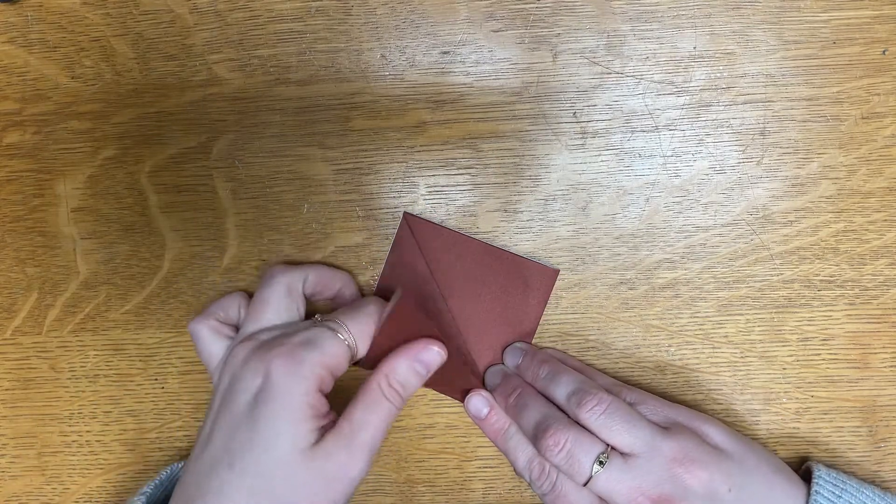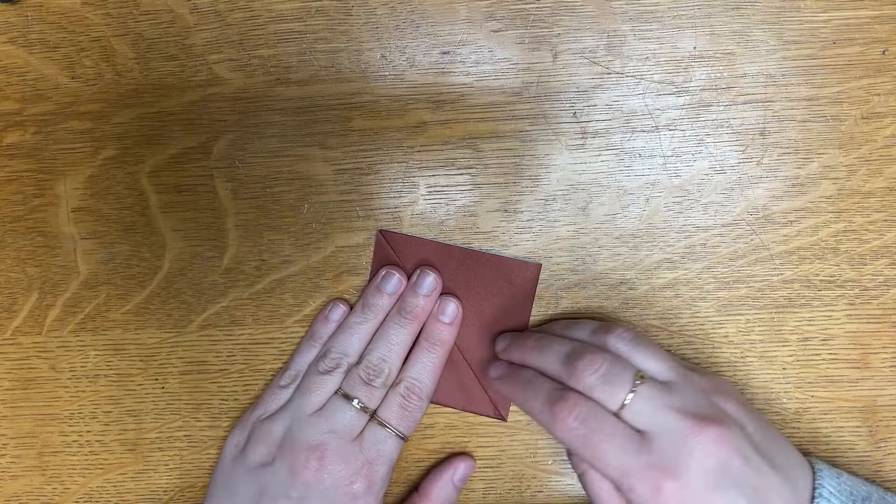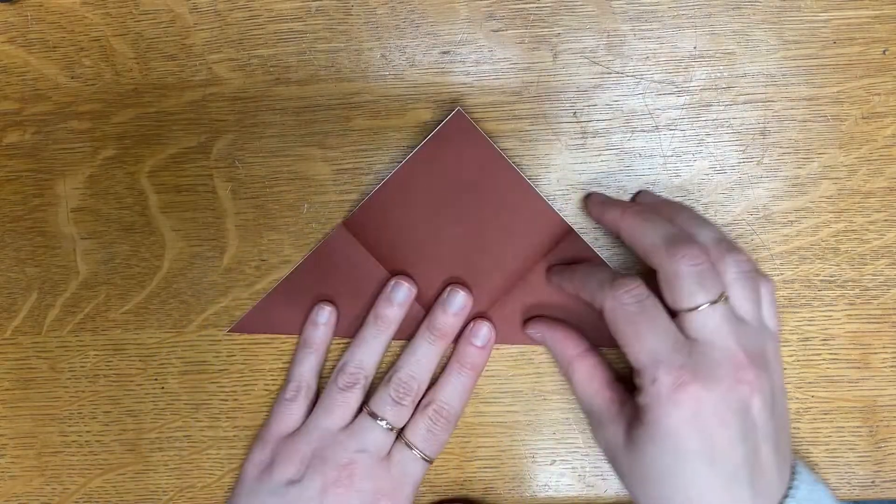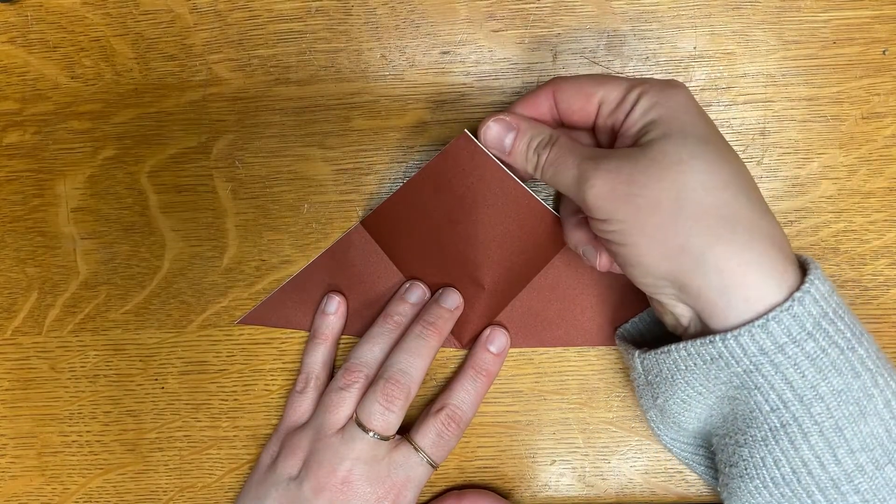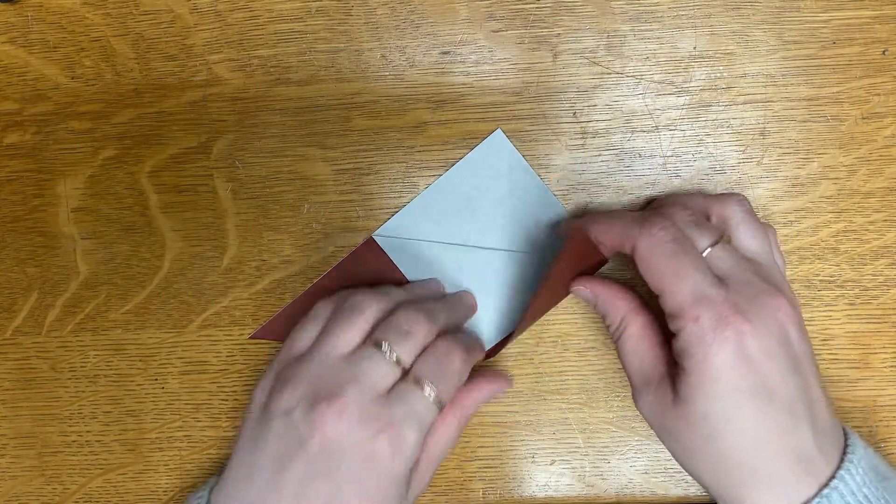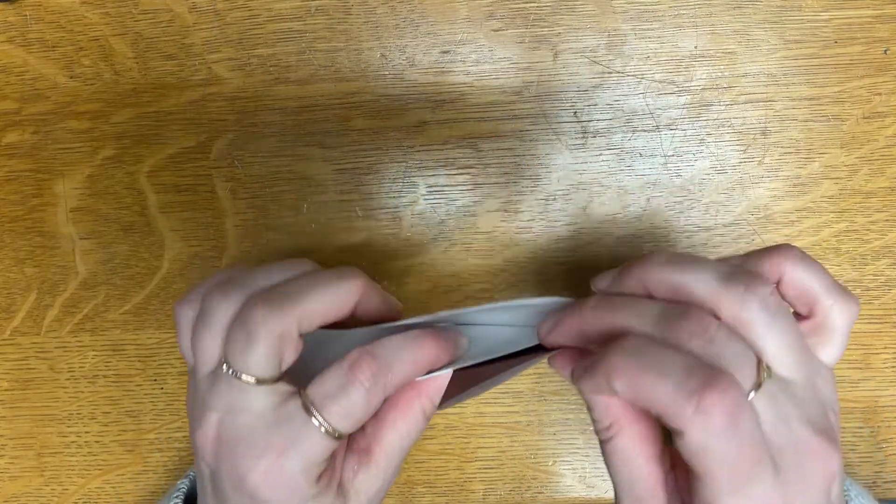Fold the tips to the topmost point like so, undo your little diamond shape, fold the top point, just one part of your fold, down to the bottom, and then tuck those corners in.